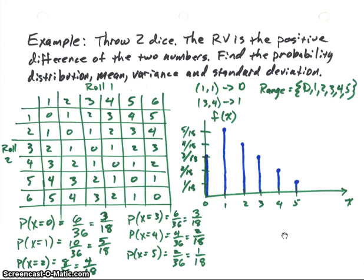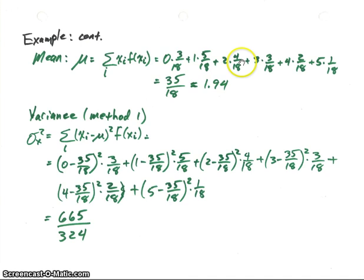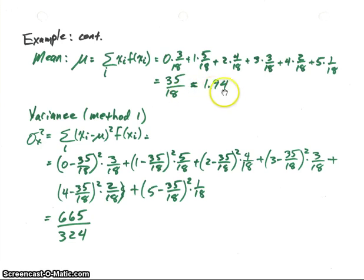Now we use that distribution function to calculate the mean, variance, and standard deviation. For the mean, we take each value of X times the distribution value and sum them all up. So we have zero times three-eighteenths, plus one times five-eighteenths, plus two times four-eighteenths, and so on. Multiplying all those together and summing up, we get thirty-five eighteenths, which is about 1.94.